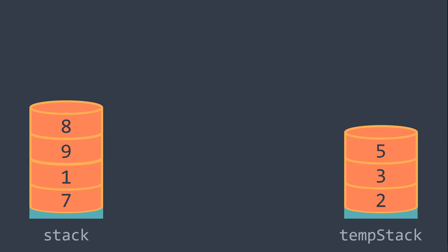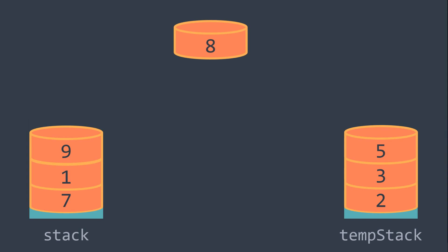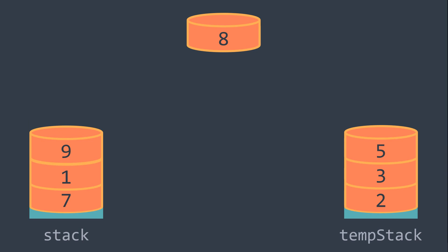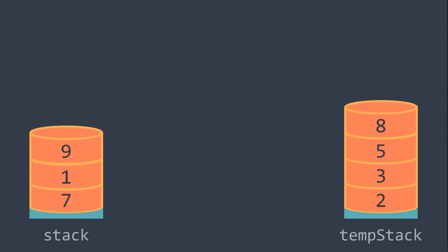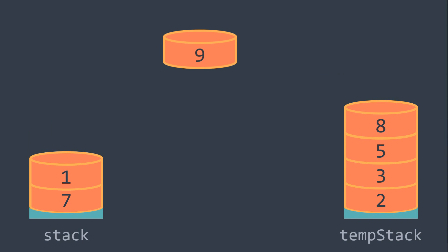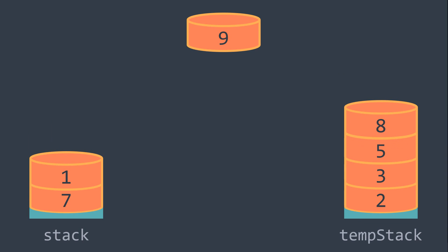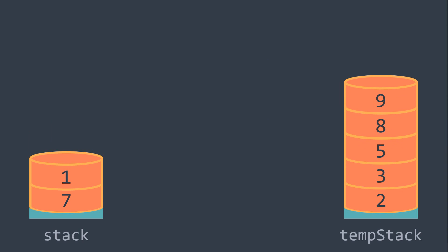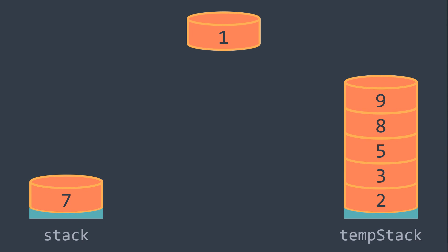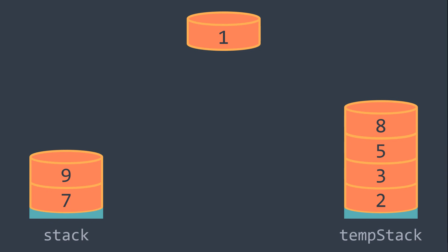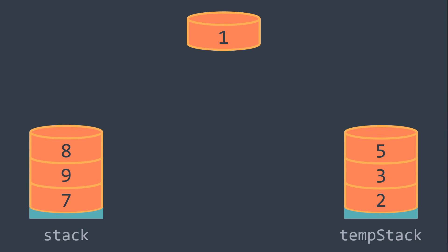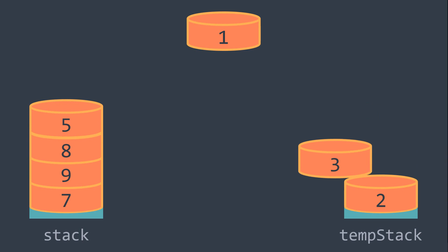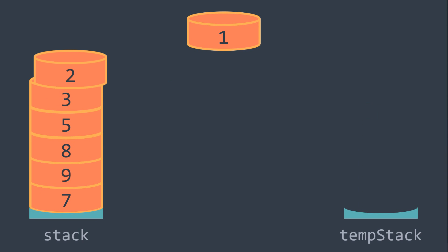So now we pop value 8 — it's not smaller than 5, we directly push it. We pop value 9 — it's not smaller than 8, we directly push it. Now we pop value 1: it's smaller than 9, so we take 9 to stack — same thing for 8, for 5, for 3, and for 2. Now we can push 1, and we continue.